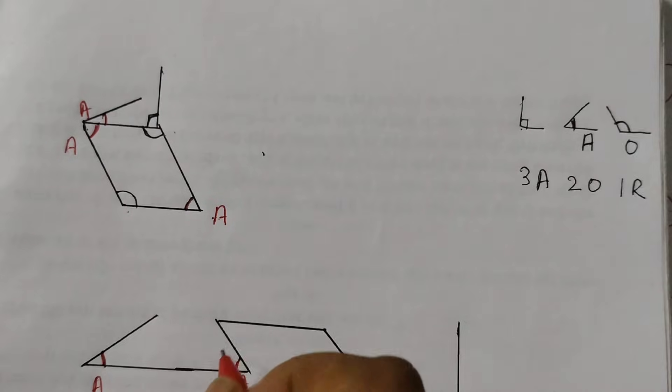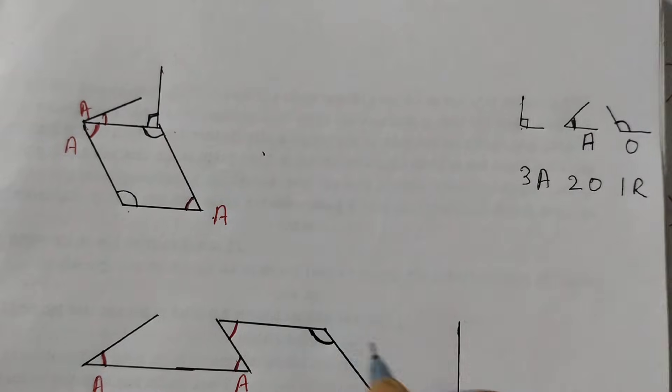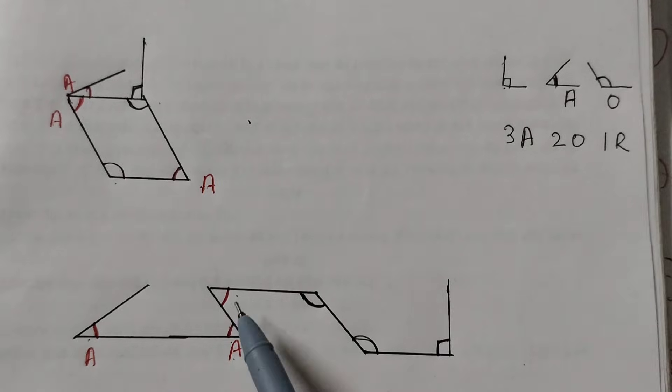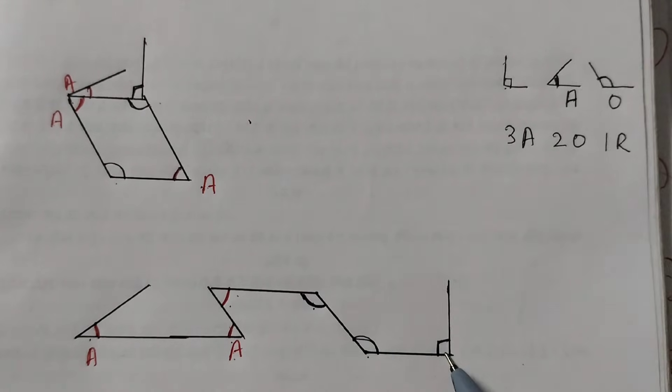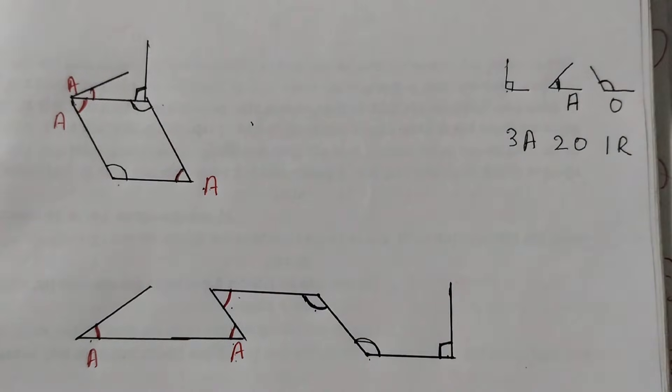So let me show it. This is again acute angle, less than 90 degrees, here we have obtuse angle, obtuse angle, right angle. So it is acute acute acute, obtuse obtuse and then right angle. Let us draw one more.